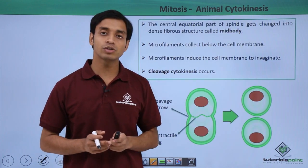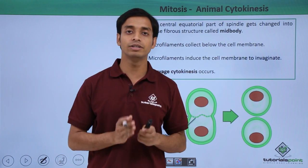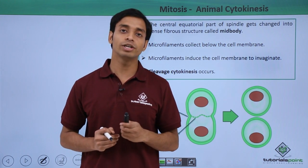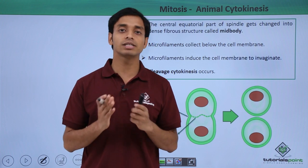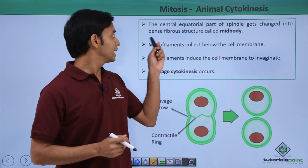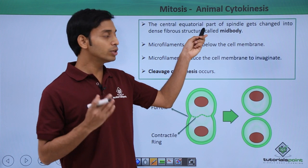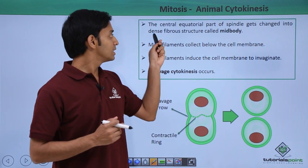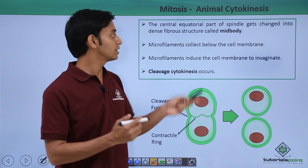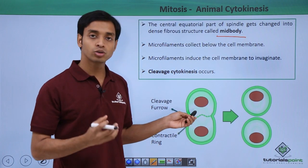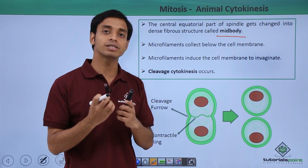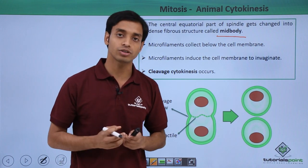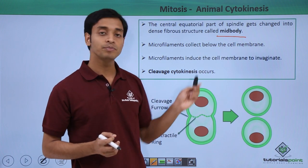This process of cytokinesis is slightly different in the case of animals and plants. In case of animal cells, the central equatorial part of the spindle gets changed into dense fibrous structures, and these structures are known as the mid-body. The dense spindle fibers get condensed and solidified to form these dense structures called the mid-body.